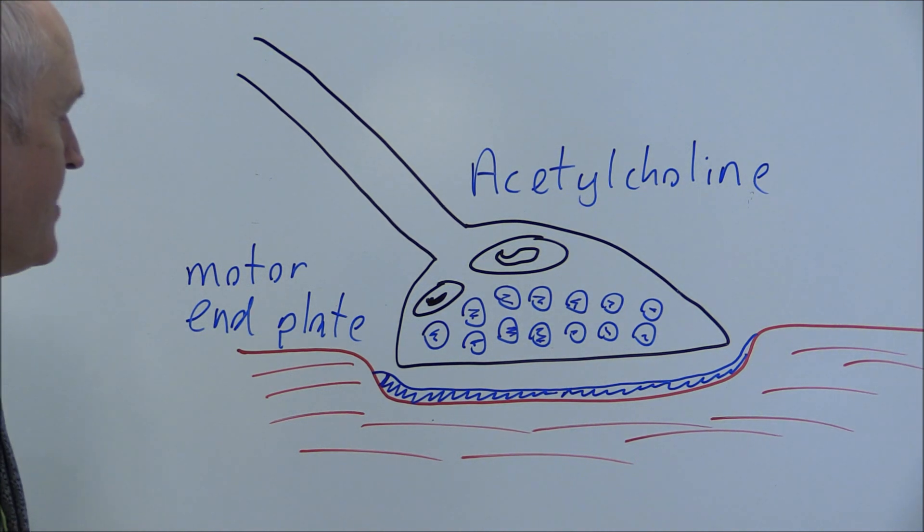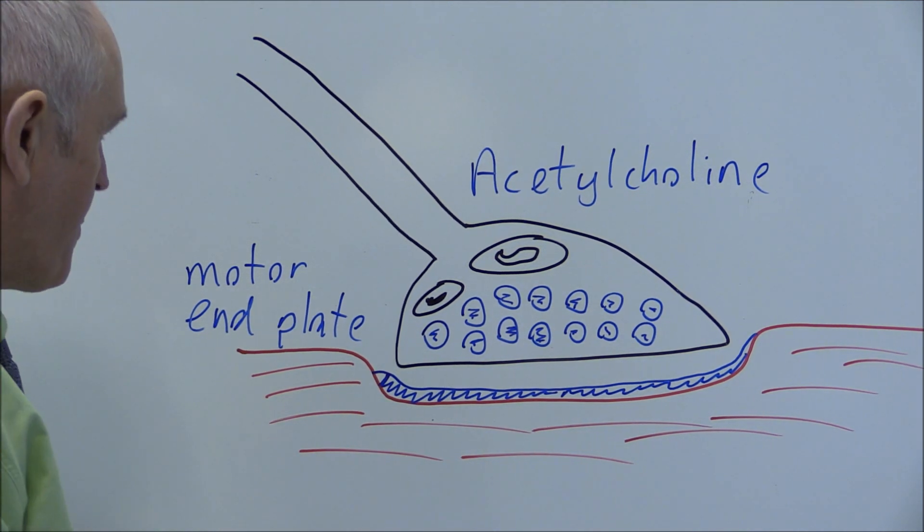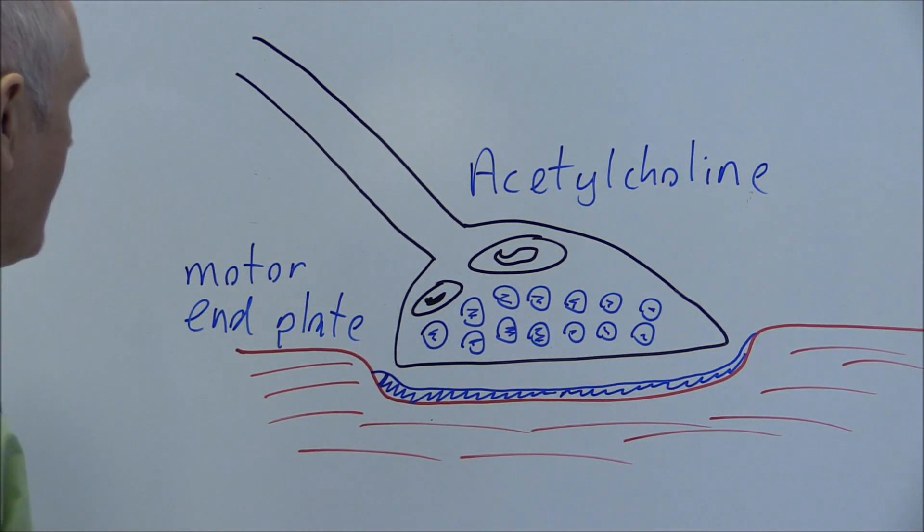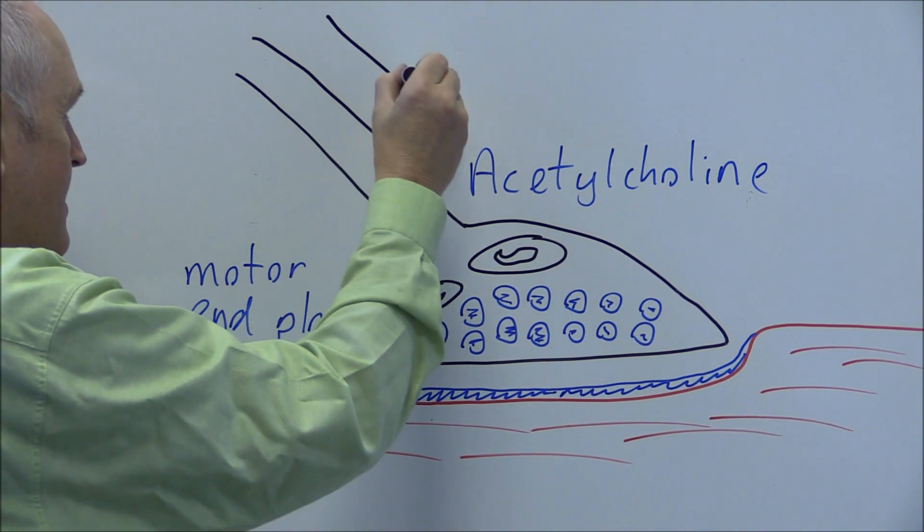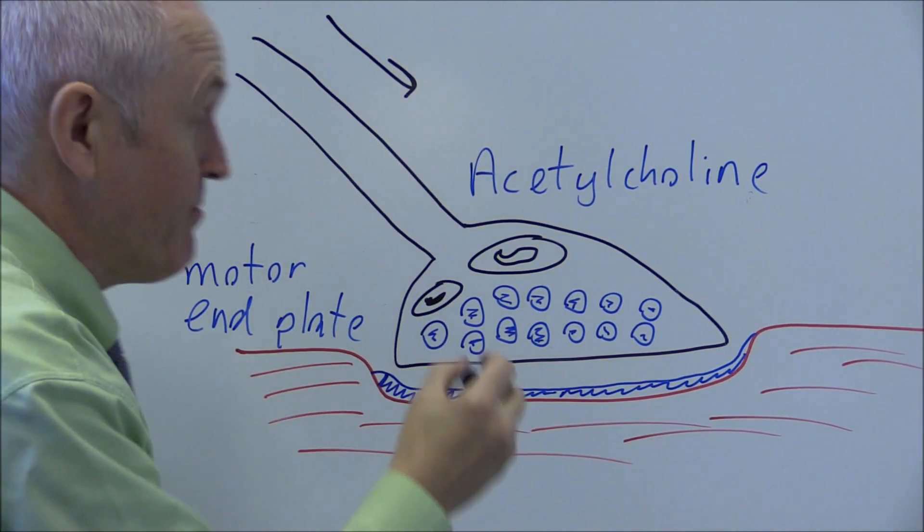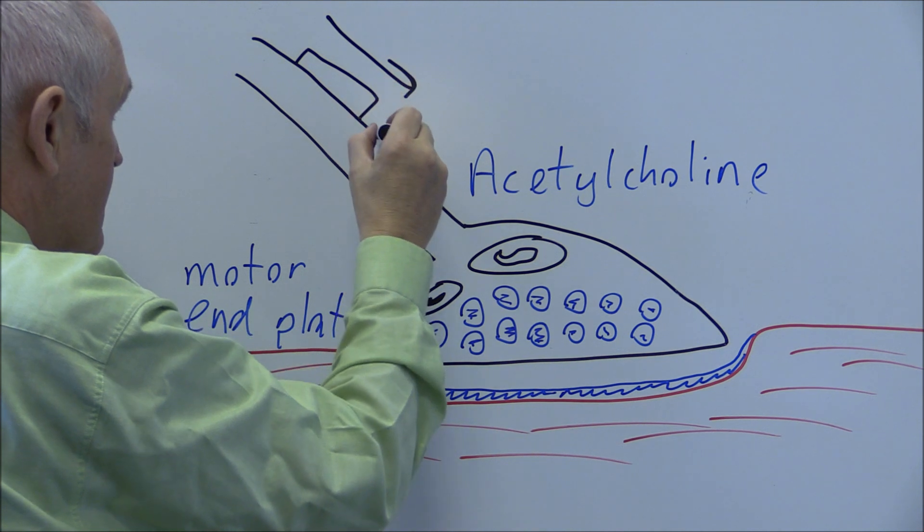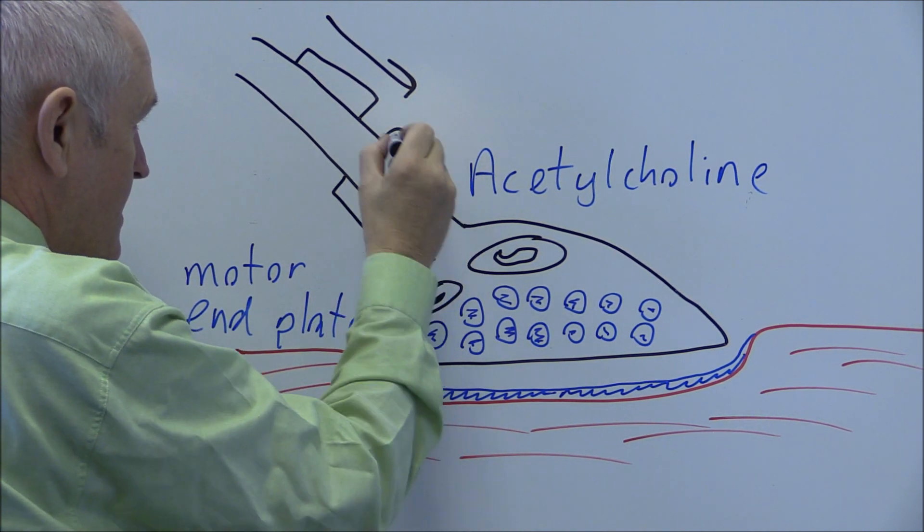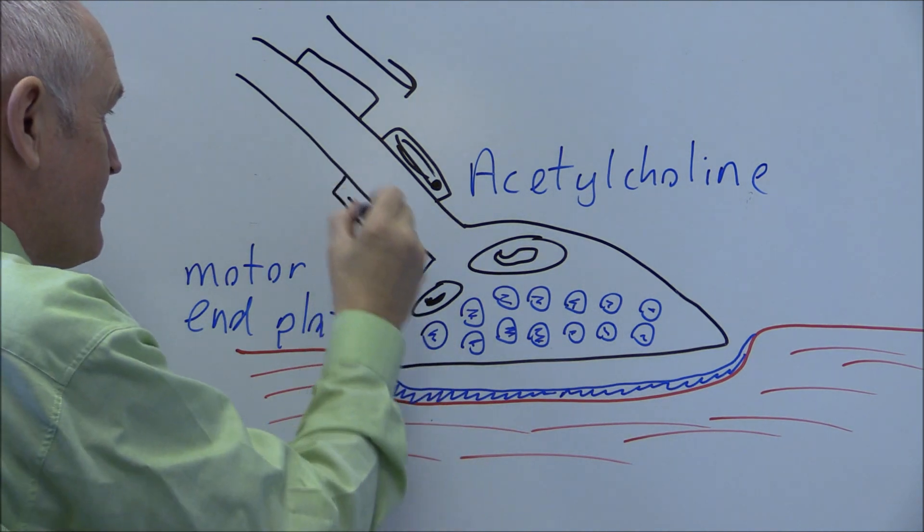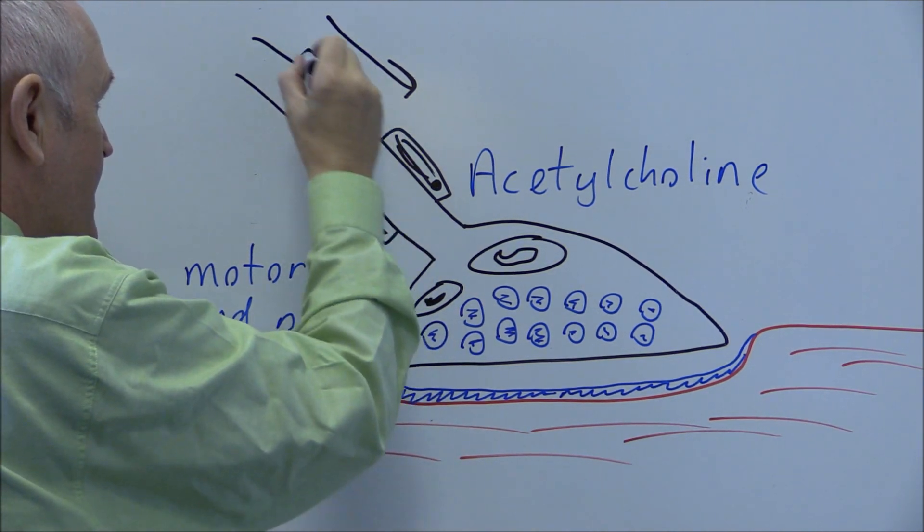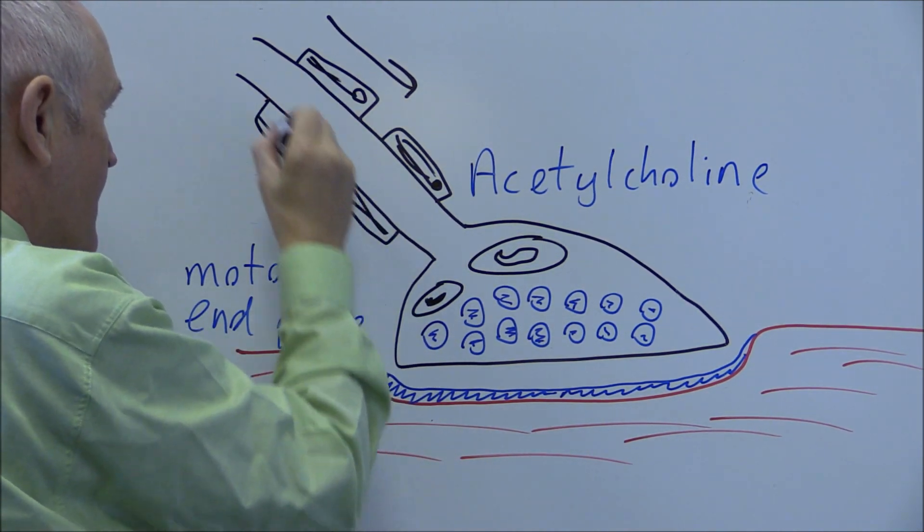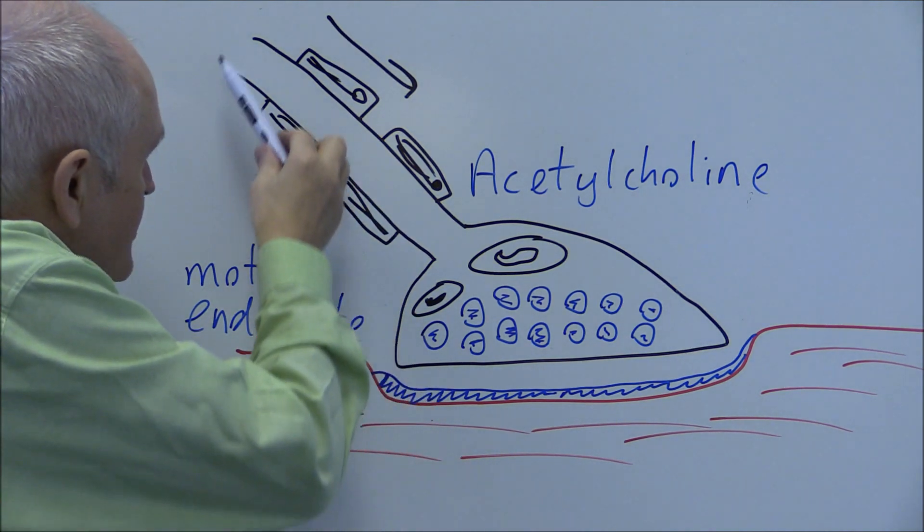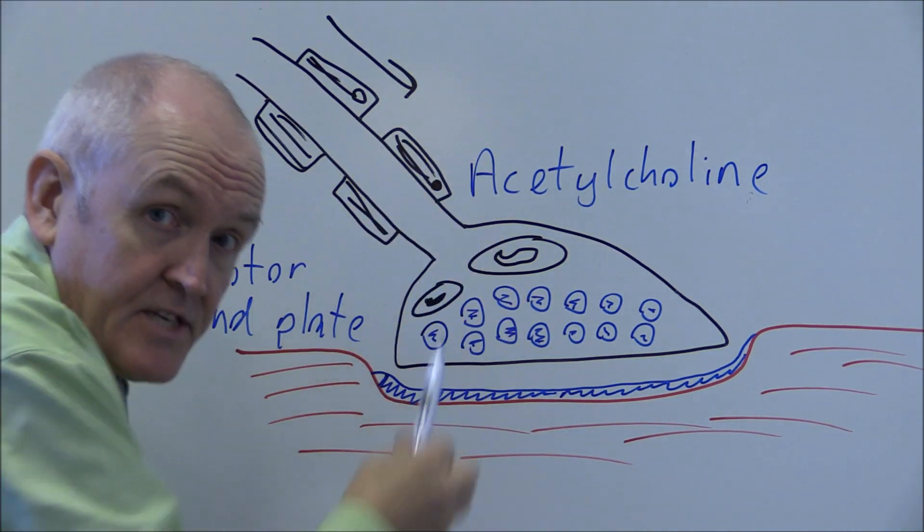So when an electrical nerve impulse comes down the axon, this is going to be very probably myelinated of course, with the Schwann cells surrounding. The nerve impulse is going to come down via this saltatory transmission.